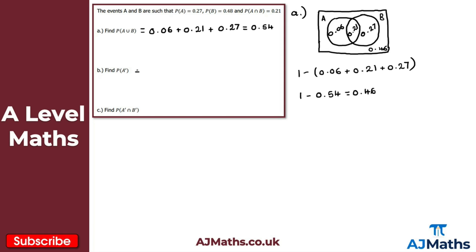For part B, we find the probability of A complement. Using the complement rule, the probability of A complement equals 1 minus the probability of A, which is 1 minus 0.27, giving us 0.73.